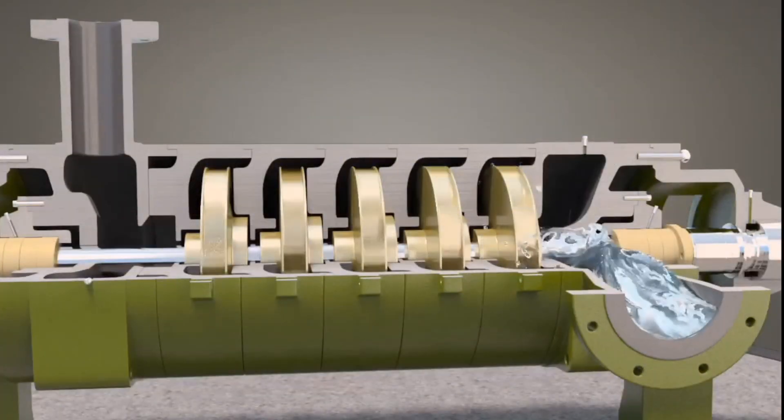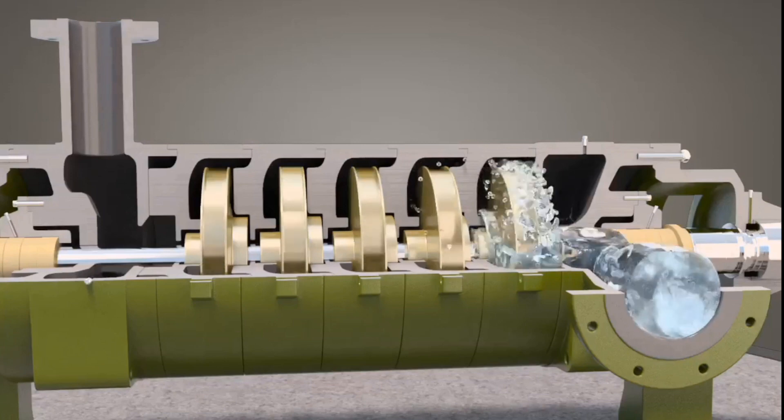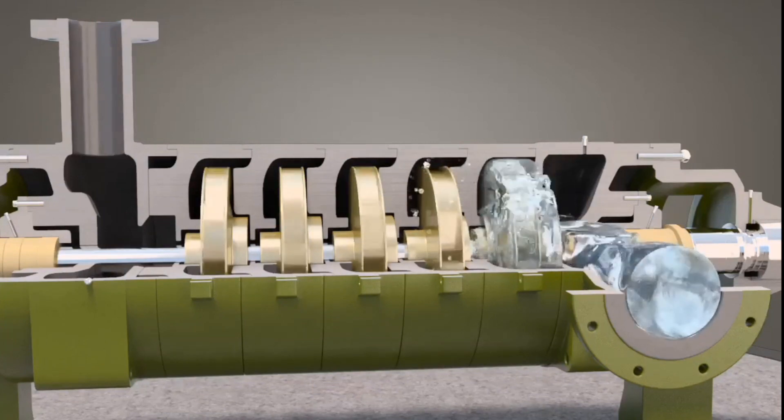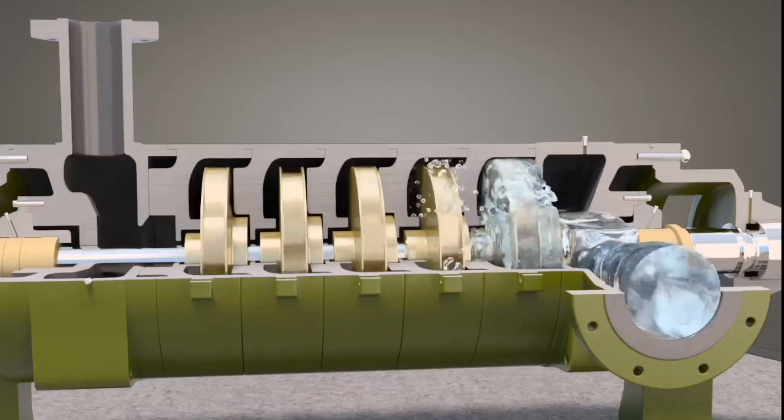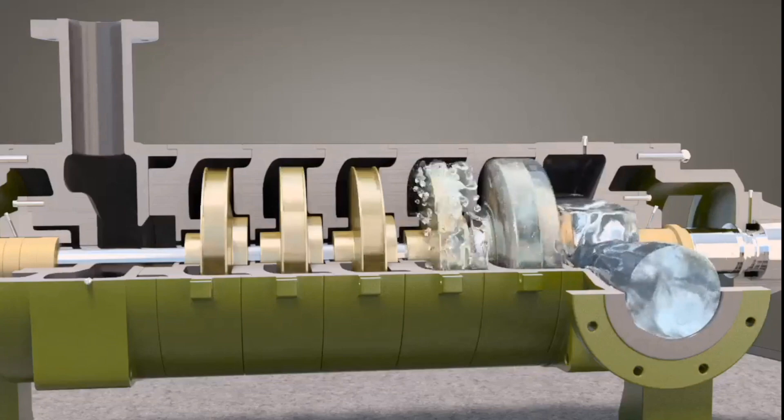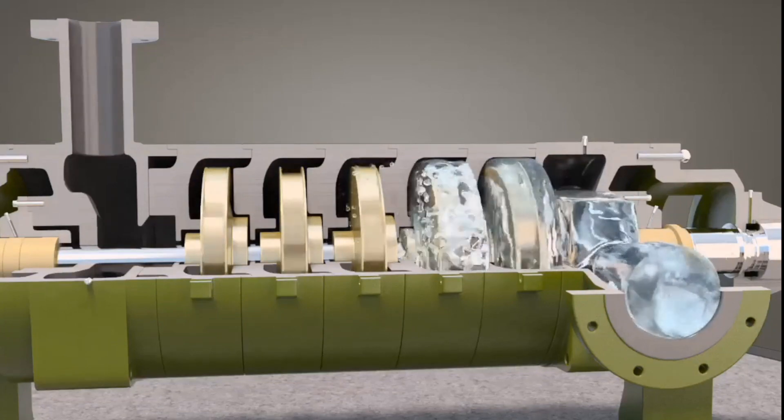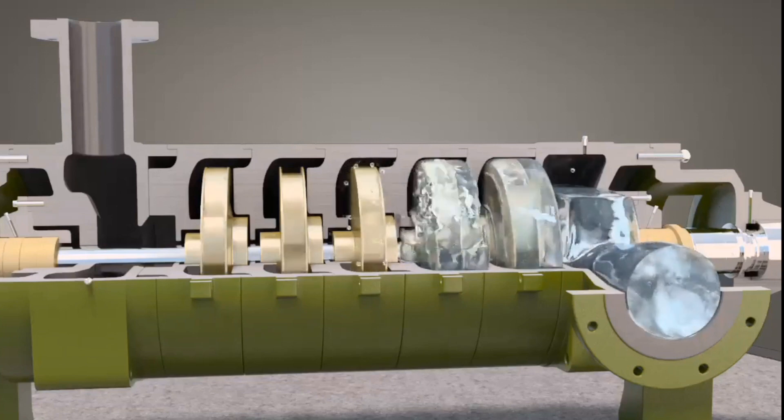Fluid enters the first chamber at suction line pressure and leaves the first impeller's outer edge at an elevated pressure. Upon leaving the first stage, the fluid enters the second stage where the pressure is increased further. Each succeeding stage increases the pressure of the fluid.